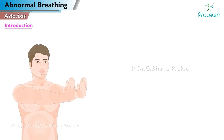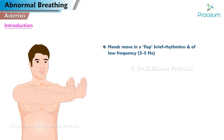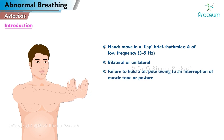Asterixis. Introduction. When the patient is asked to hold their arms extended with wrists dorsiflexed, the hands move in a flap that is brief, rhythmless, and of low frequency. Asterixis may be bilateral or unilateral. It is more simply described as a failure to hold a set pose owing to an interruption of muscle tone or posture, and is more easily understood when observed rather than described.